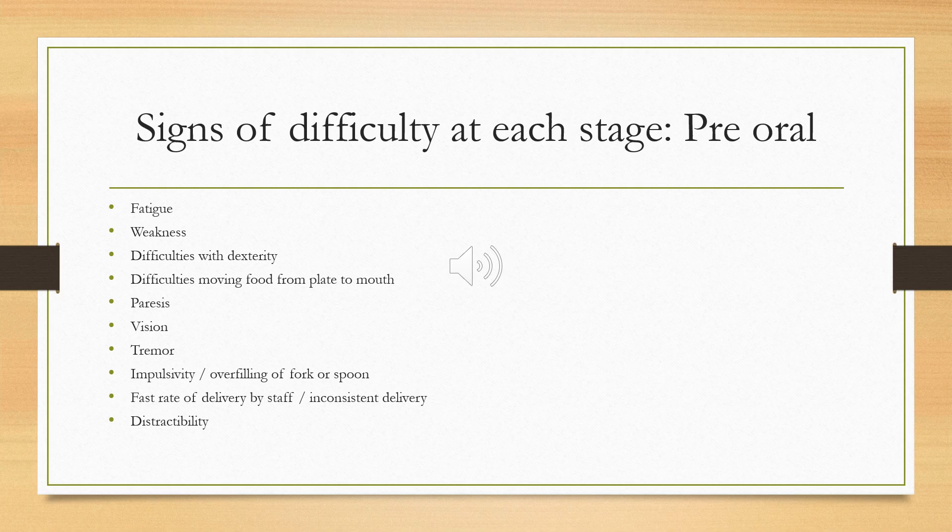If a person isn't able to initiate picking up a utensil, they're only really initiating the swallowing process at the time it reaches into the mouth rather than when they look at the food and pick up the utensil. Inconsistent delivery can also cause difficulty — if as a staff member you're called away in the middle of a meal and the person is waiting, that can result in reduced intake and the food can change temperature. And distractibility is important — if a person is in a wheelchair and finds it difficult to turn, their back should be to a wall so they can see in front of them and aren't startled by a door opening behind them.